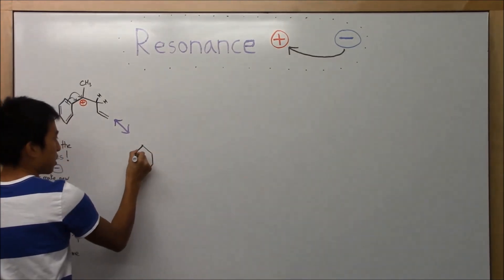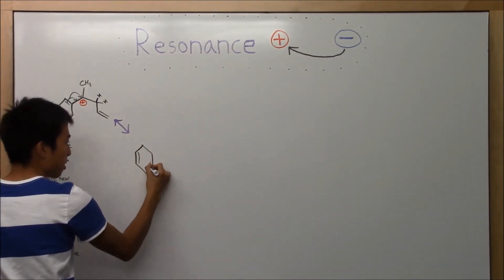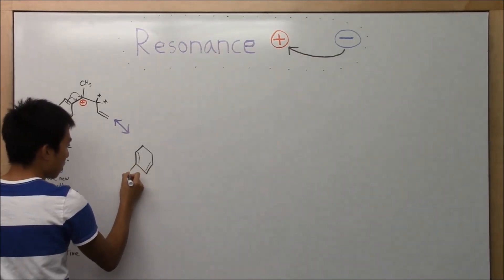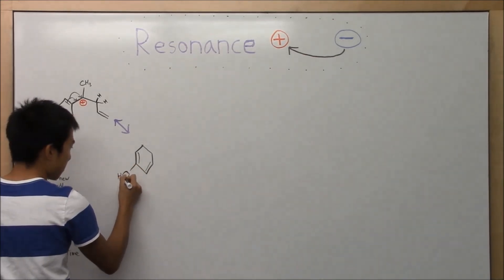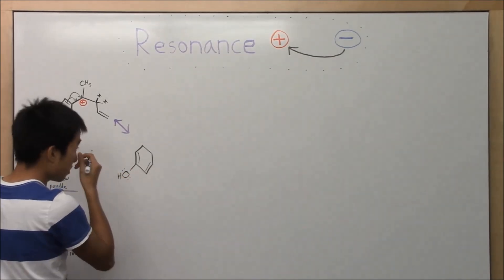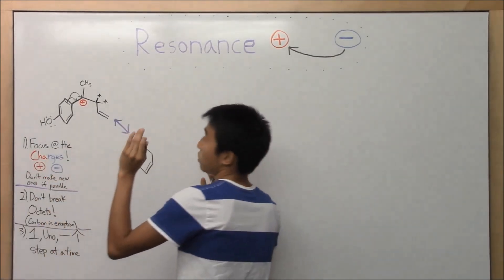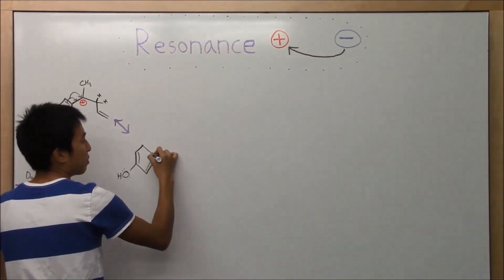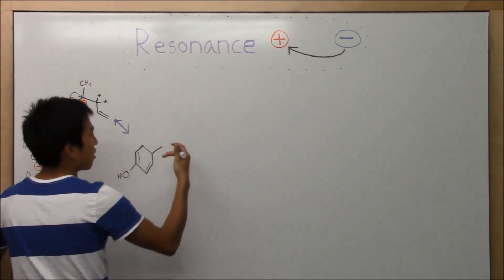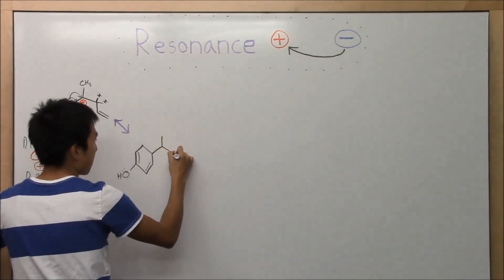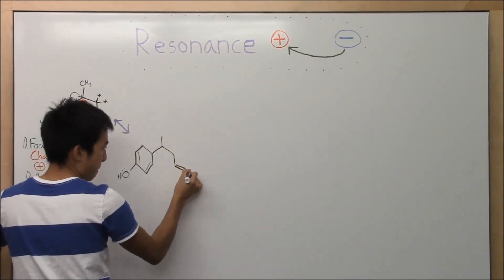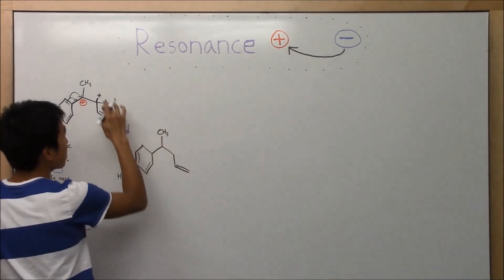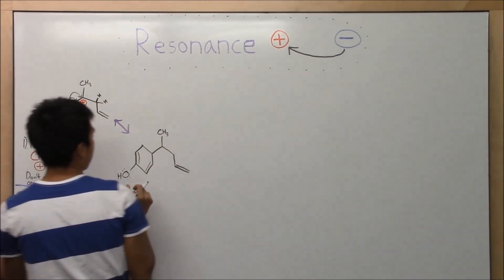So I'm going to draw this pi bond, because I know that pi bond and this other pi bond were unaffected — we didn't touch them at all. The OH is still here. Also, if it helps you, you can draw in all the hydrogens to keep track, but for big molecules it's too much so I don't like doing that. I'm going to leave out the hydrogens.